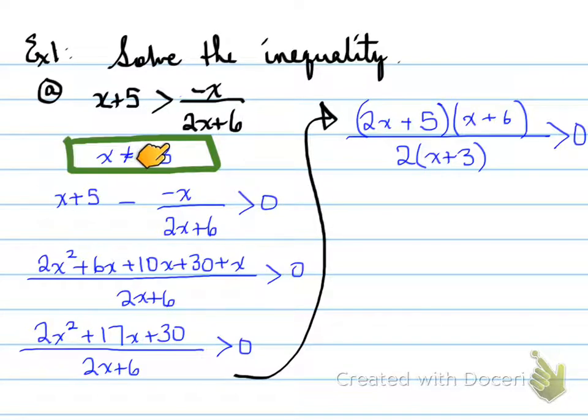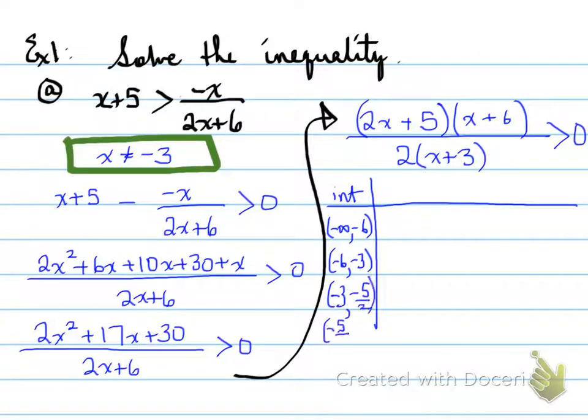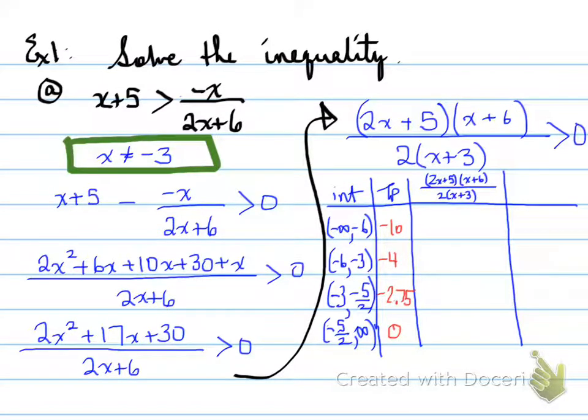We set the interval from left to right. So our interval table is from negative infinity to negative 6, negative 6 to negative 3, negative 3 to negative 5 over 2, negative 5 over 2 to infinity. We're going to set some test points. These are the values within those intervals, and then we're going to take that whole equation and put that into our chart. Each of these pieces will have the values plugged in, and we will find the answer to each of these.